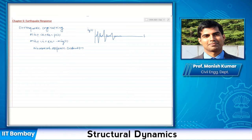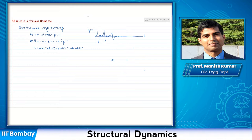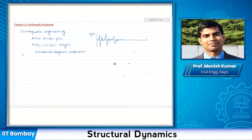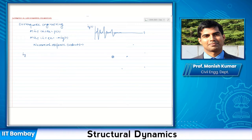Whenever there is an earthquake, accelerographs are placed at different locations. Records may or may not be available depending on the region — California has many records because it is very earthquake-prone and well-instrumented. Even in India, instrumentation now exists in some seismically active regions. These accelerographs measure the ground excitation u_g(t), and what we obtain is called an accelerogram.